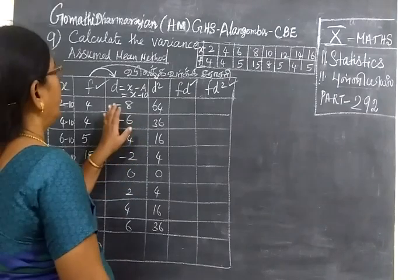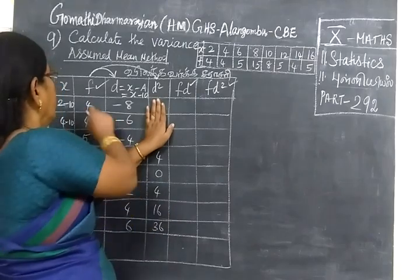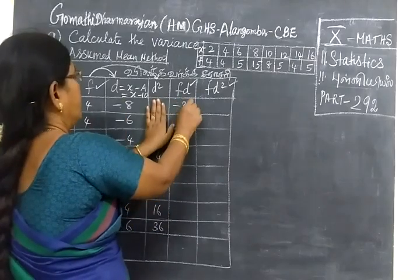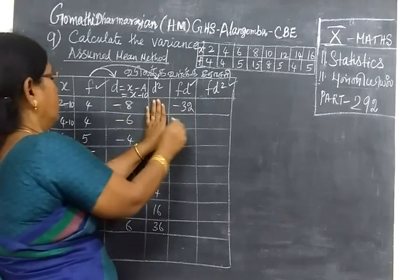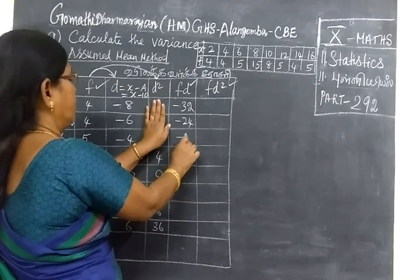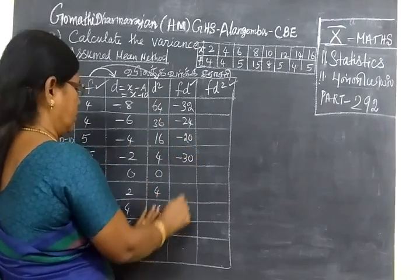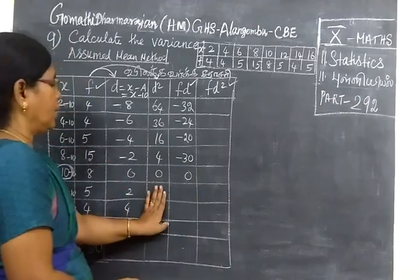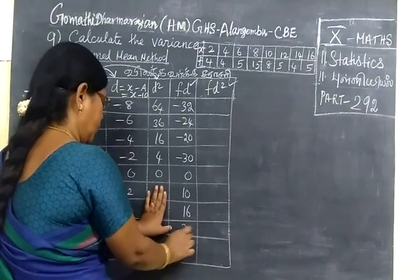Then find FD. FD can be used in five conditions, so FD is D times frequency. Minus 32, minus 4, then minus 24. Students are making mistakes in sign on D, so minus 30. This is 0, then 10, 16, and 18.